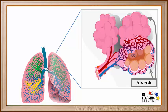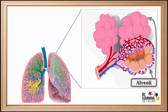From the alveoli, CO2 goes into tubes called bronchioles, and from the bronchioles into larger tubes called bronchi, and then through the trachea and finally out of the body. A small amount of water from the blood also enters the alveoli as water vapor, and like CO2, moves through the bronchioles, bronchi, trachea, and out of the body.